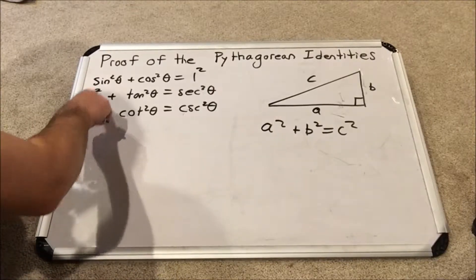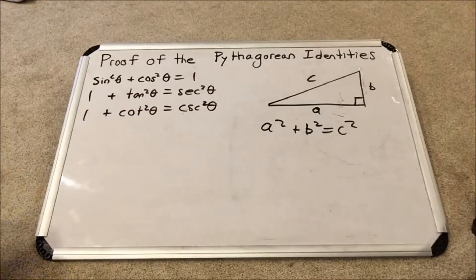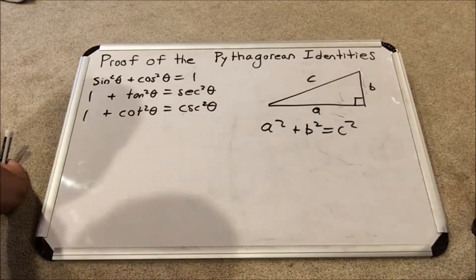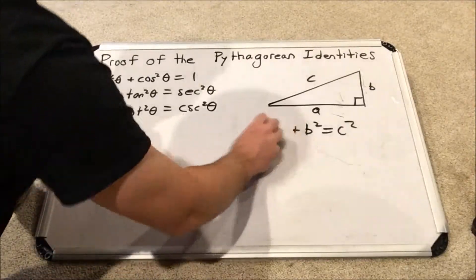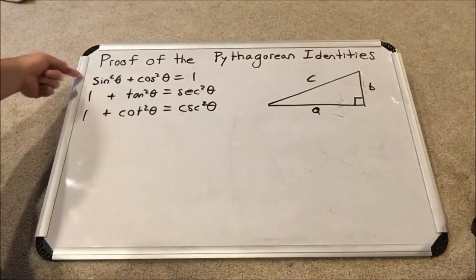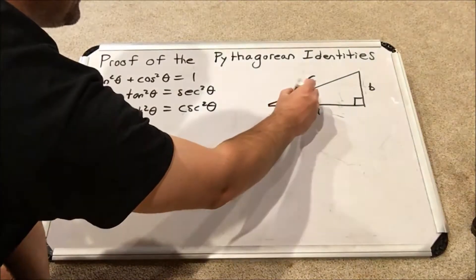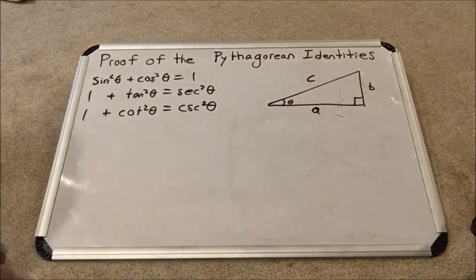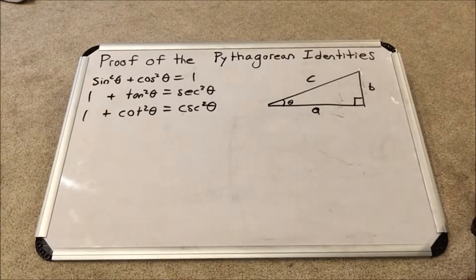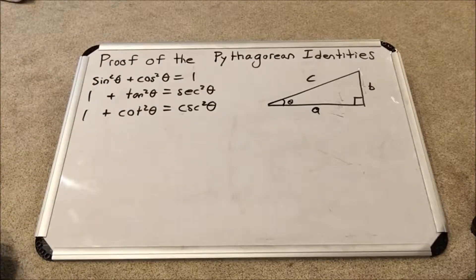Now, onto proving them. We're going to prove them one at a time using this right triangle right here — keep in mind the Pythagorean theorem, we will use it. Let's start with the first one: sine squared theta plus cosine squared theta equals one. I'm going to define a specific angle — this acute angle theta — and set up an expression for each trig function in the first Pythagorean identity.